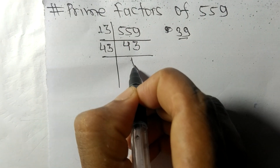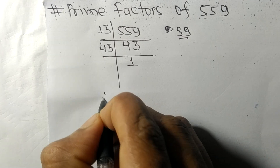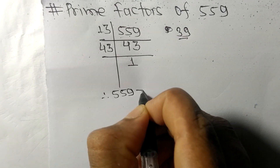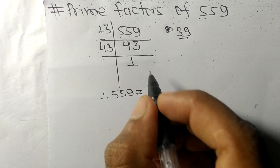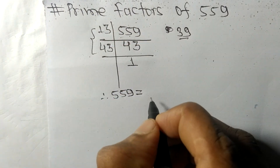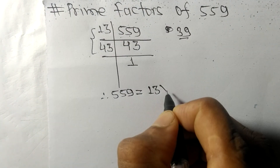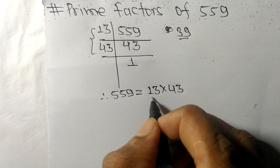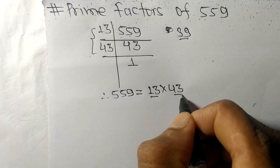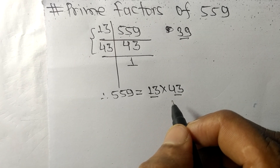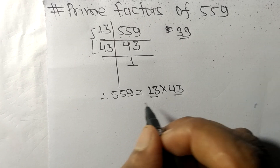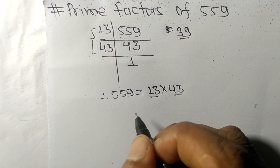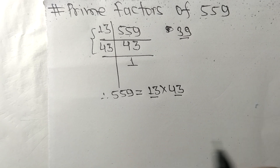We get 1, therefore 559 equals 13 times 43. So 13 and 43 are the prime factors of 559. That's all for today, thanks for watching.